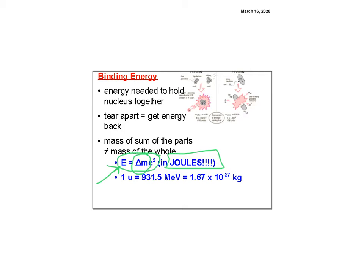C is the speed of light, so think of c-squared. The difference in mass between the separate particles and the combined nucleus is converted into energy — it's either absorbed to form the nucleus or released when the nucleus comes apart. This equation gives energy in joules. The key conversion is: 1 u equals 931.5 MeV, which equals 1.6 times 10 to the negative 27 kilograms. This shows that mass and energy are the same thing.